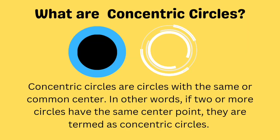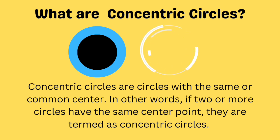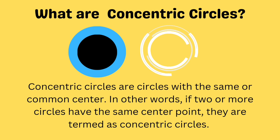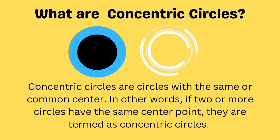Let's talk about what concentric circles are. Concentric circles are the circles with the same or common center. In other words, if two or more circles have the same center point, they are termed as concentric circles.